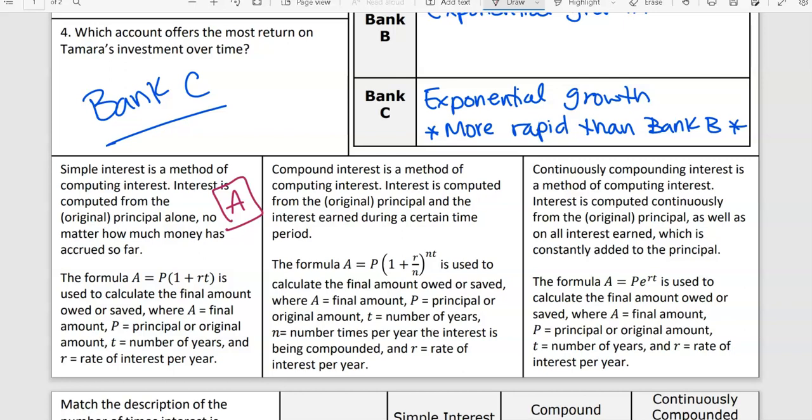Next, compound interest. This is a method of computing interest. Interest is computed from the original principle and the interest earned over a certain period of time. Sounds like it's the same thing almost, but look at my formula. The formula A equals P times 1 plus R over N raised to N times T is used to calculate the final amount. A is still your final amount, P is still what you start with, T is still number of years. But see now we have that N thrown in there? N is the number of times it's being compounded. So typically with simple interest it's just happening once a year, the end. But the middle one might be like a monthly thing or a weekly thing or a daily thing on when they're building the interest on top of it.